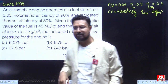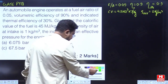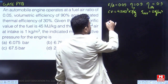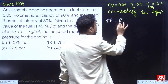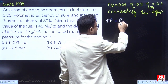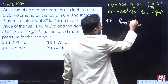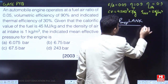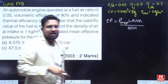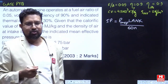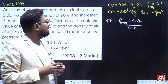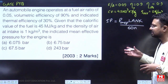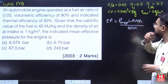We need to find the indicated mean effective pressure. For indicated mean effective pressure, we use the formula: indicated power = P·L·A·N·K, where P is the indicated mean effective pressure, L is the stroke length, A is the piston area, N is RPM, and K is the number of cylinders divided by 60·n, where n is 2 for a 4-stroke engine and 1 for a 2-stroke engine.